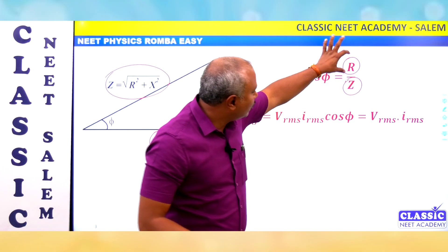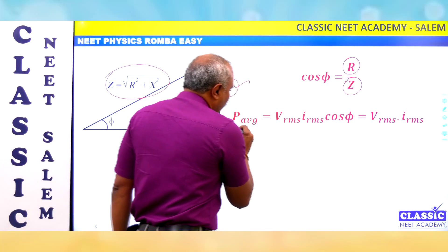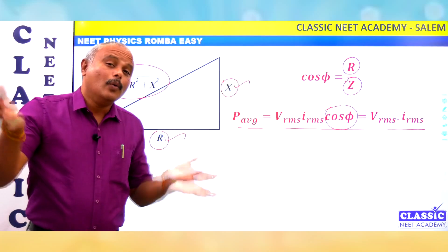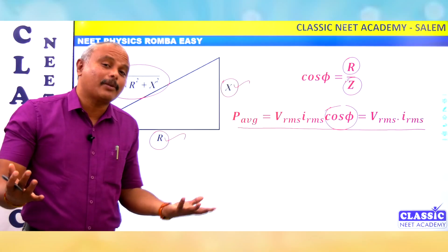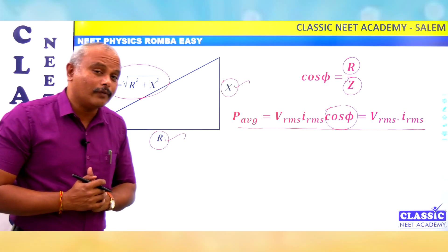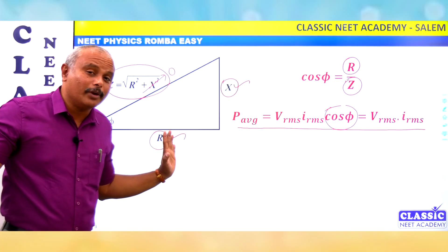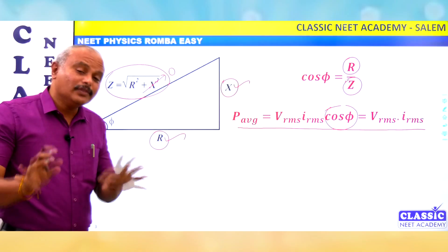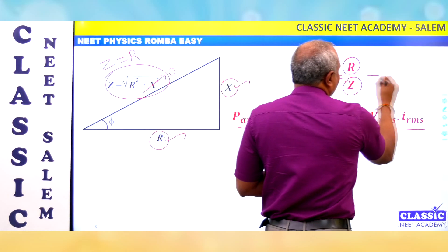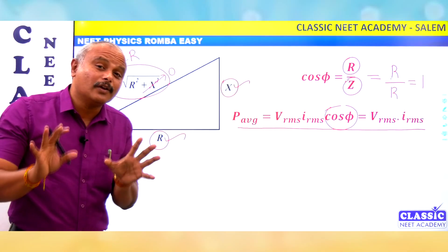This is the actual power dissipation versus apparent power. The average power consumption is VRMS × IRMS × cos φ. Power consumption is maximum when cos φ equals 1. When reactance is zero — at resonance conditions — impedance equals resistance, so R by R gives power factor equal to 1, and energy loss is maximum.